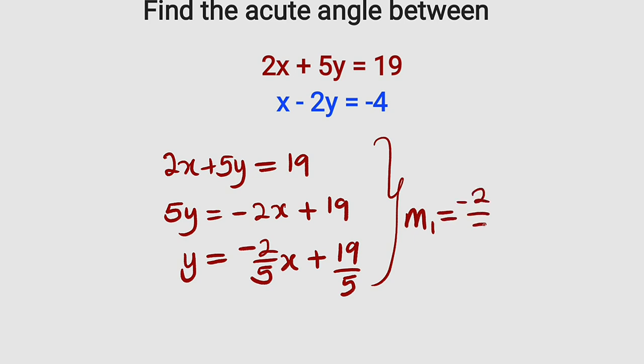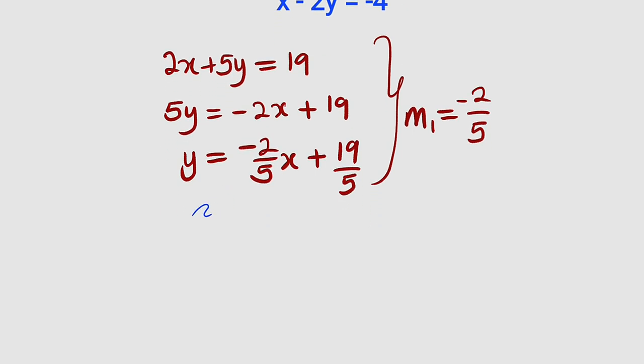Let us move on to the second equation, which is x minus 2y equal to negative 4. Take x to the right-hand side. We have negative 2y equal to negative x, then minus 4.